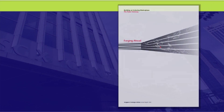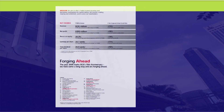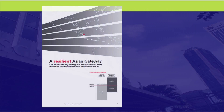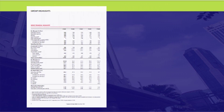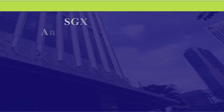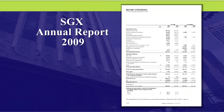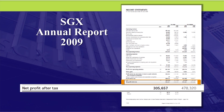Now let's look at the SGX 2009 annual report as an example. FY 2009 proved to be a challenging year for companies globally, and this includes SGX. Net profit after tax attributable to equity holders fell 36%, from $478 million to $306 million.